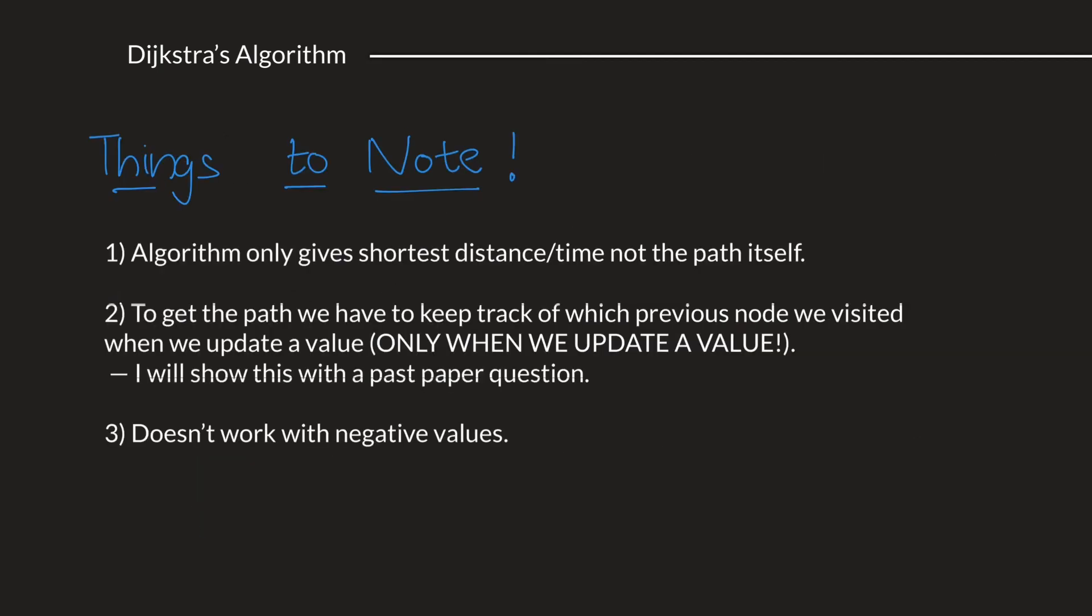There's some things that you should note with this algorithm, that it only gives you the shortest time or distance using the method that we currently used. If you want to keep track of the path as well, we have to write down which node we previously visited when we happen to update a value. Only when you update a value, write down which was the last node that you visited before you visited the node that you are currently updating. I will show this in a past paper question. And, one more important thing is that this algorithm, in any case, most cases doesn't work with negative values.